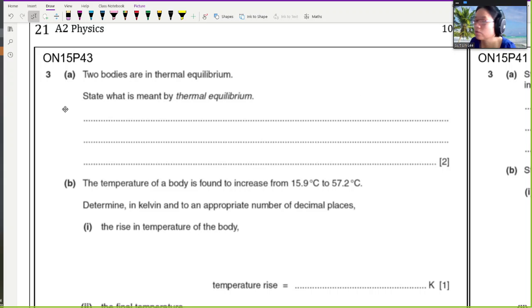Okay, in this video, we are going to look at a past year question from Winter 15, paper 4-3. Let's read the question together. We have two bodies in thermal equilibrium. So the first part to warm up, state what is meant by thermal equilibrium. You see that this one is two marks, so you have two points.